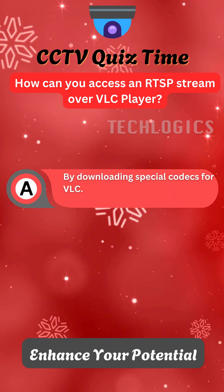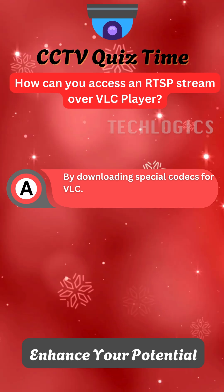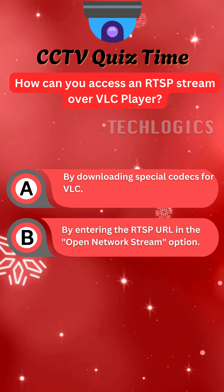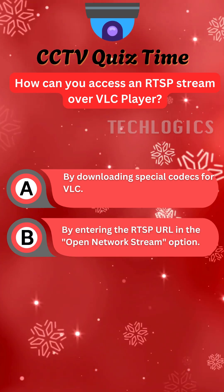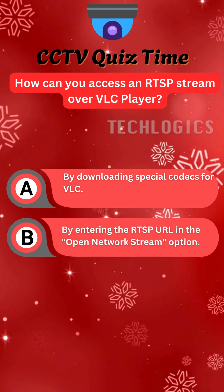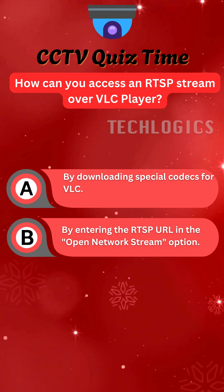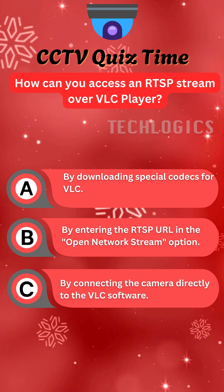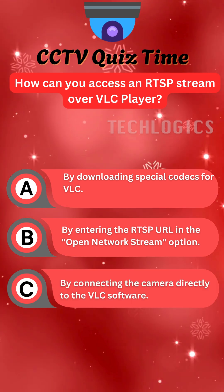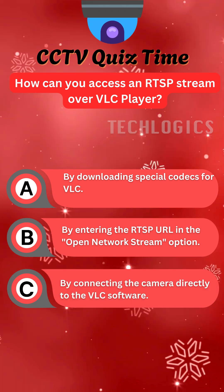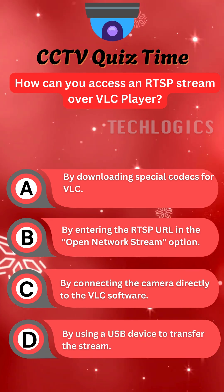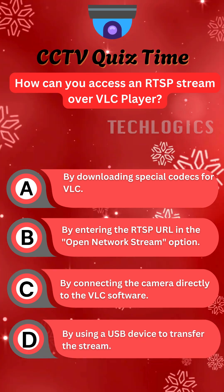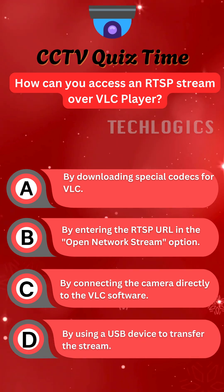A. By downloading special codecs for VLC. B. By entering the RTSP URL in the Open Network Stream option. C. By connecting the camera directly to the VLC software. D. By using a USB device to transfer the stream.